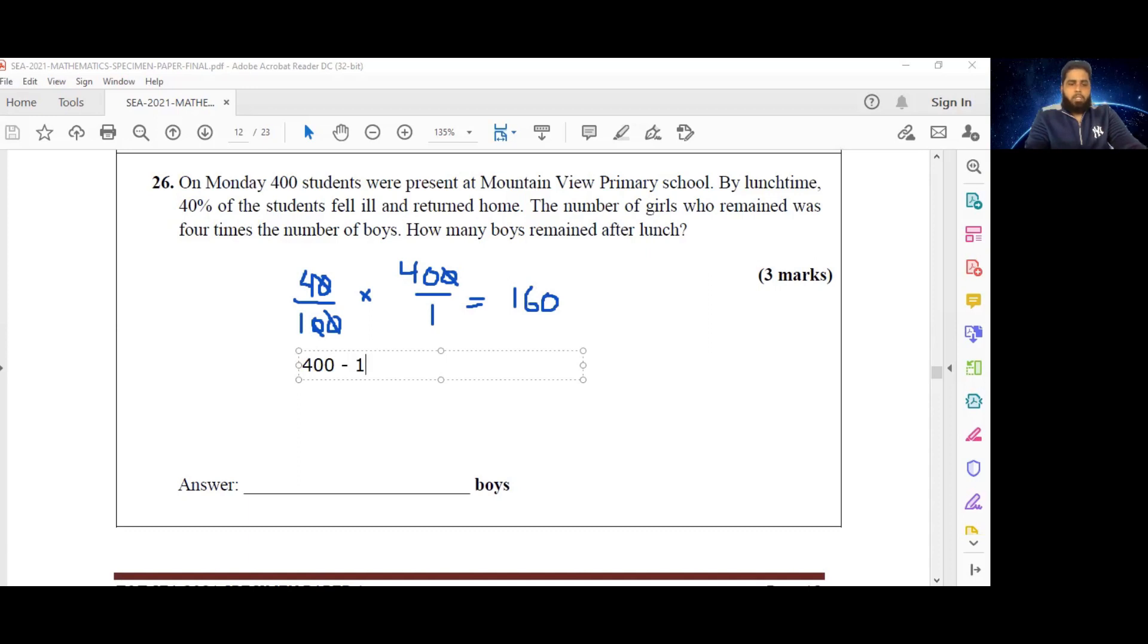When those students leave, we're going to be left with 400 minus 160, which is equal to 240 students. So now that we know we have 240 students after lunch, we have to figure out how many boys remain.